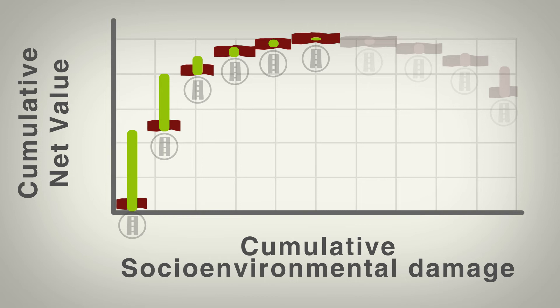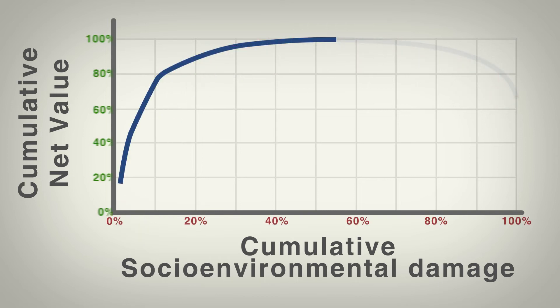If we fill in the rest of these 75 projects, what this lets us see is that you can get the majority of the benefit at a very small amount of the socio-environmental damage. From here you'd have to double the damage to get only 12% more of the total economic benefit. Or you can get all the economic benefit but you'd have to take a pretty big socio-environmental hit.